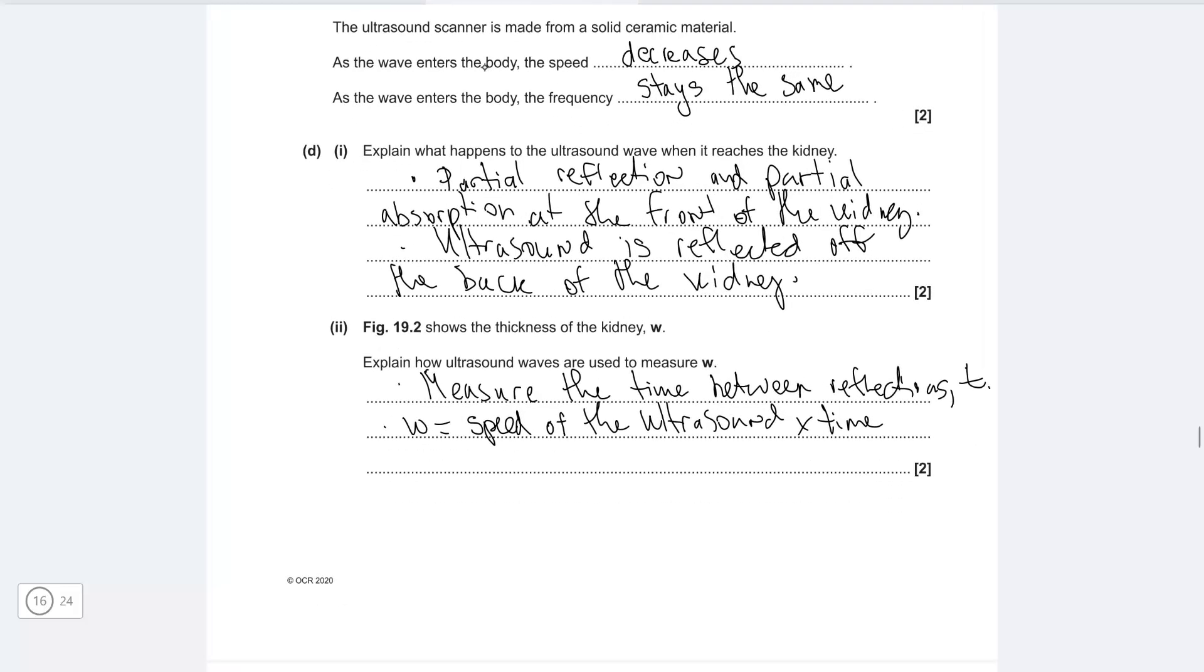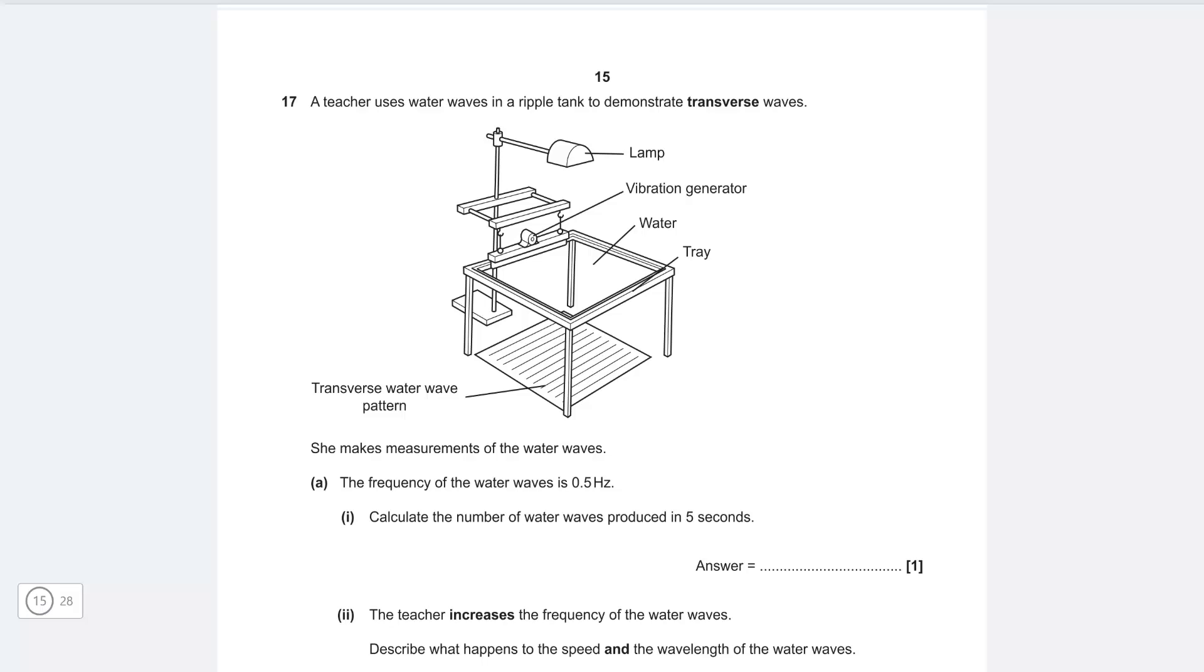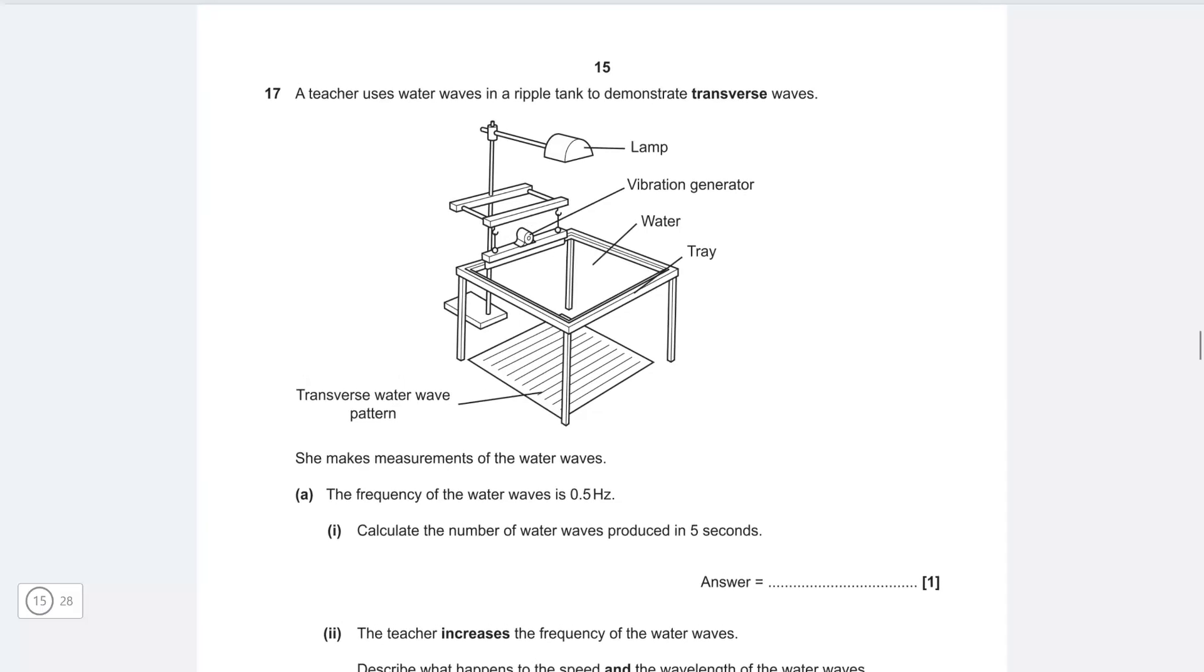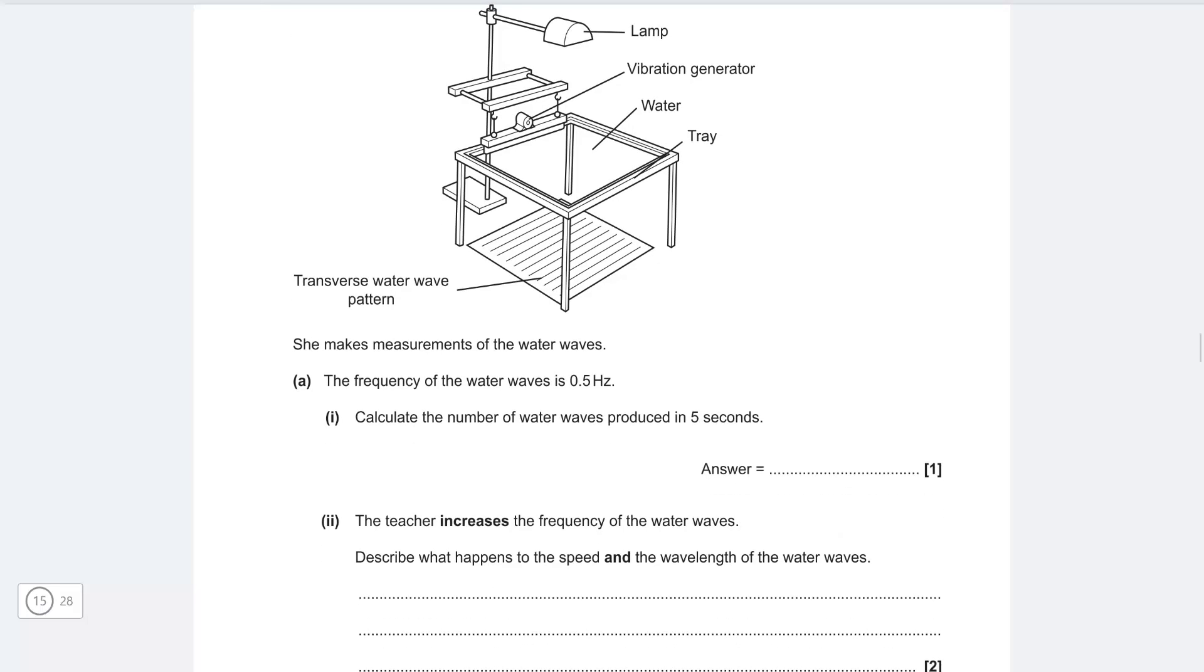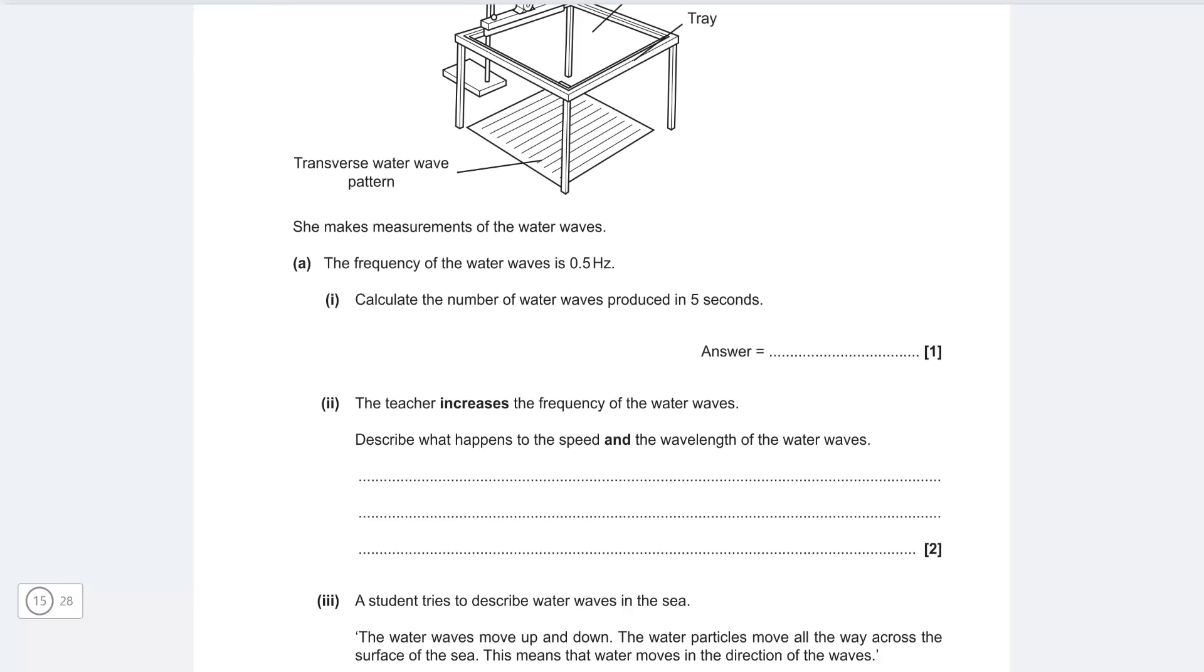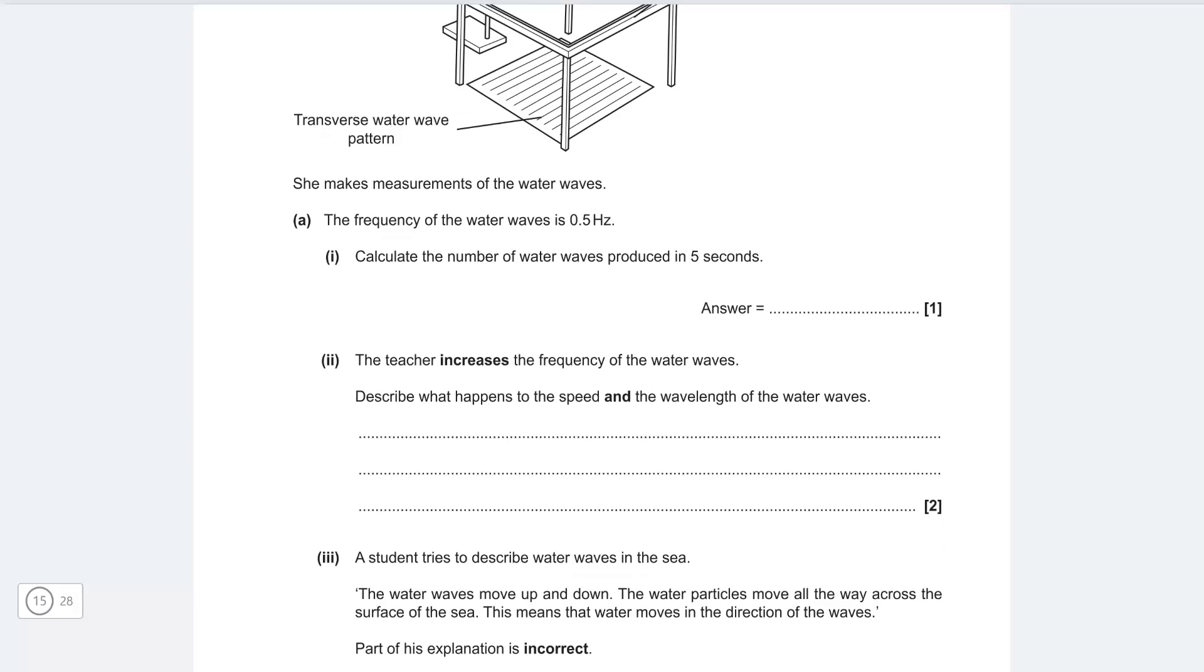So next one a teacher uses water waves and ripple tank to demonstrate transverse waves and she takes measurements of the water waves the frequency of the water wave is 0.5 hertz calculate the number of water waves produced in five seconds. So 0.5 hertz means it's 0.5 cycles or waves per second so that's half a wave every second so for five seconds it will be 0.5 times five which is just two and a half waves.